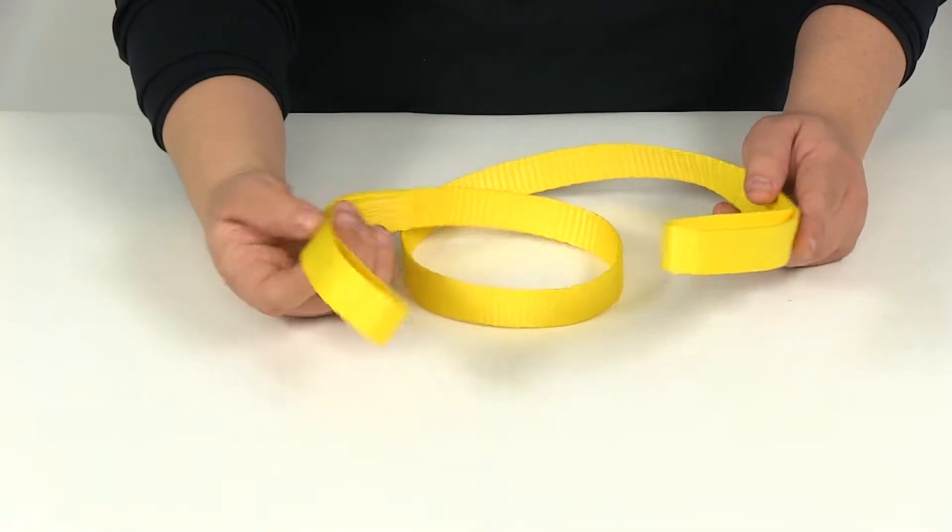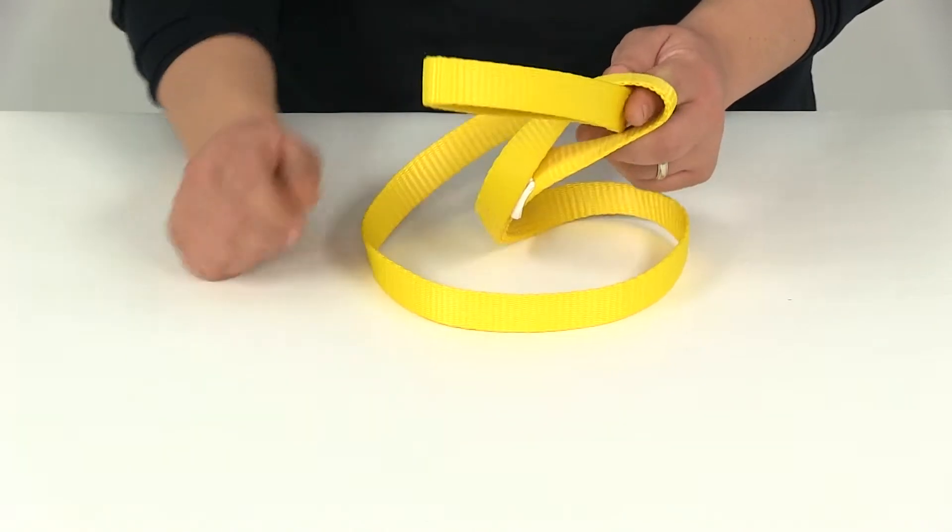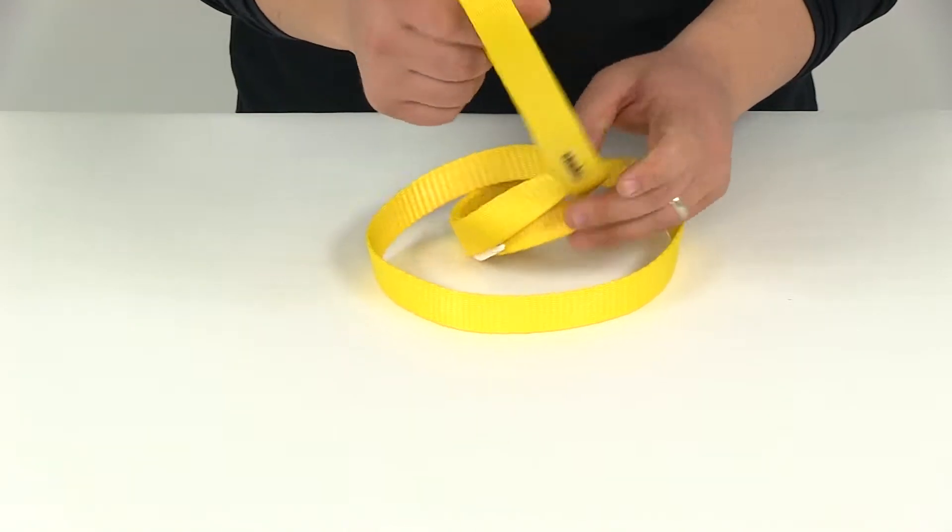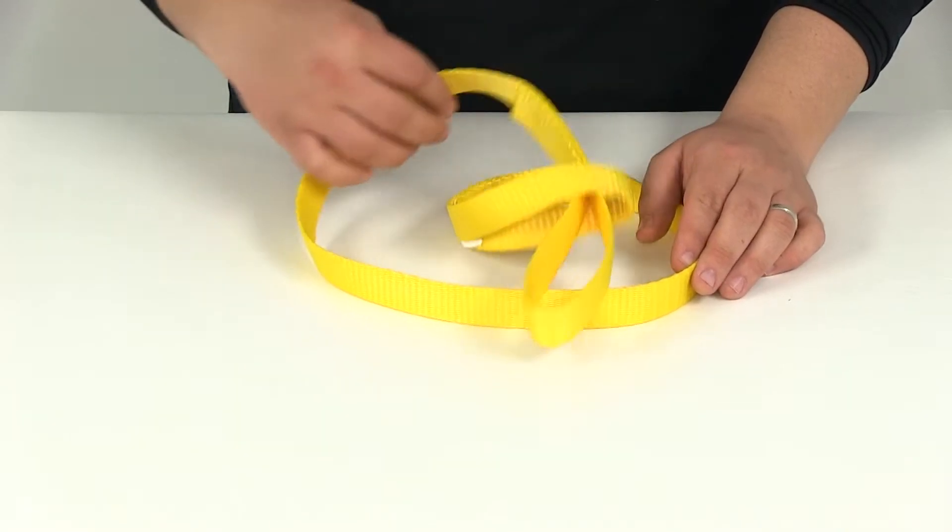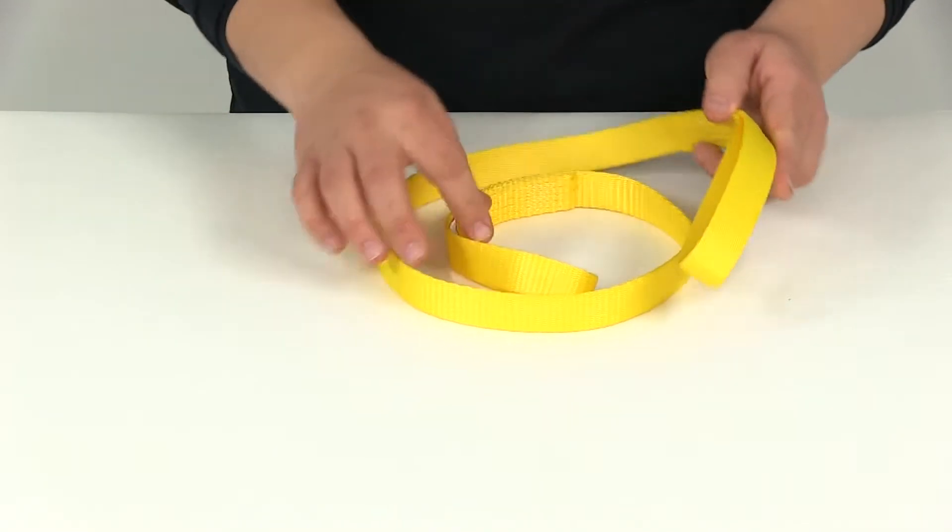And then you have the choker style, which is where you place this around your application. Put one loop through the other loop, attach your hook, and lift. That's going to give you a safe working load limit of 960 pounds.